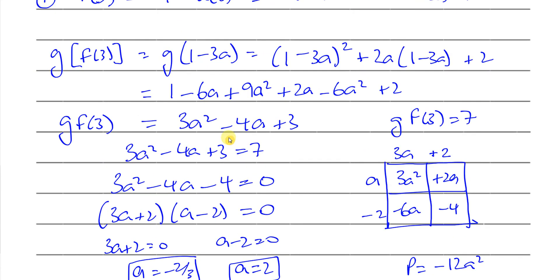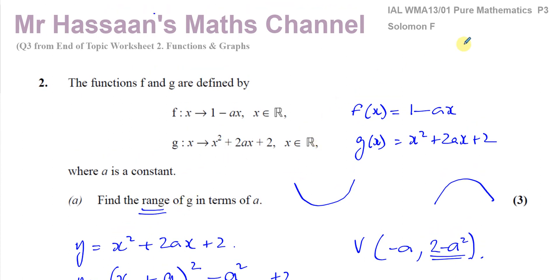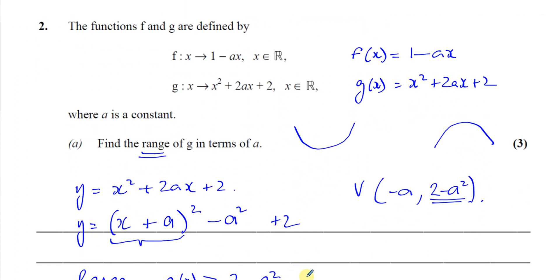We have now solved this equation and found the two values of a. I hope that was clear. If you want to see other questions from the Solomon F paper, other functions and graphs questions from P3, or other questions from end of topic worksheet number 2, check the playlists linked on screen. Thank you for watching and I'll see you again soon.